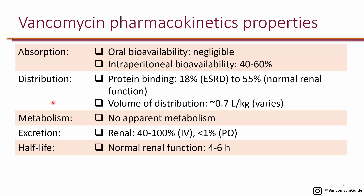Vancomycin pharmacokinetics shows a lot of variability in different patient populations, including protein binding and volume of distribution. It is renally excreted for the most part, so renal function is very important when it comes to vancomycin therapeutic drug monitoring, just like aminoglycosides. The half-life of vancomycin in someone with normal renal function is about 4 to 6 hours, and will be extensively prolonged in someone with renal dysfunction.